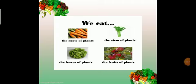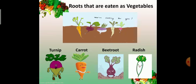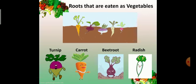We get vegetables from different parts of plants. We eat all parts of plants as vegetables. We eat the roots of plants, stem of plants, leaves of plants and fruits of plants. We cook most of the vegetables before eating and cooking makes them soft and tasty. We eat different vegetables every day. From these, some are roots vegetables, some are stems vegetables, some leaves vegetables and some are flowers vegetables. Now, we will learn one by one. Roots that are eaten as vegetables. Turnip, carrot, beetroot and radish. These are roots vegetables.